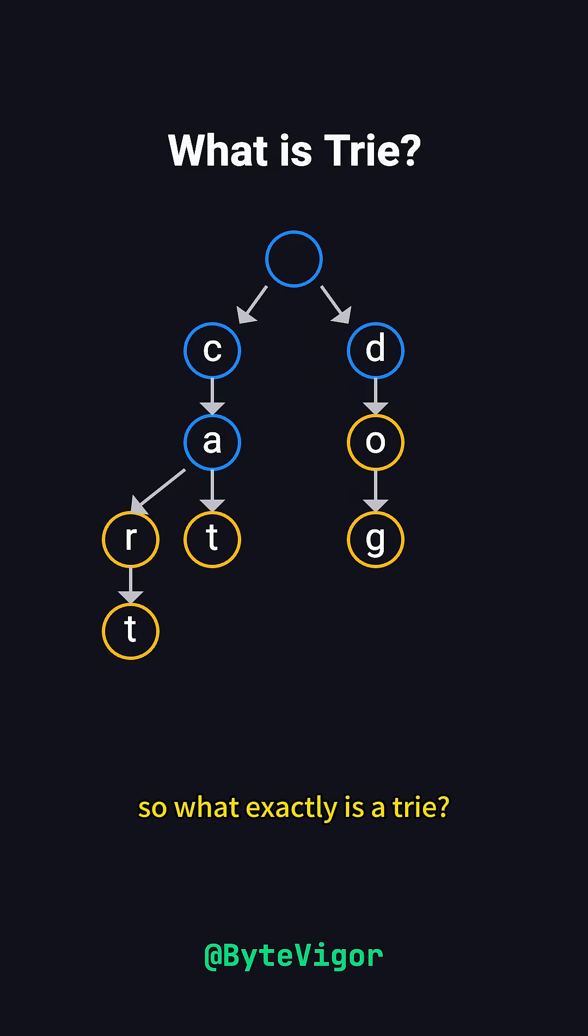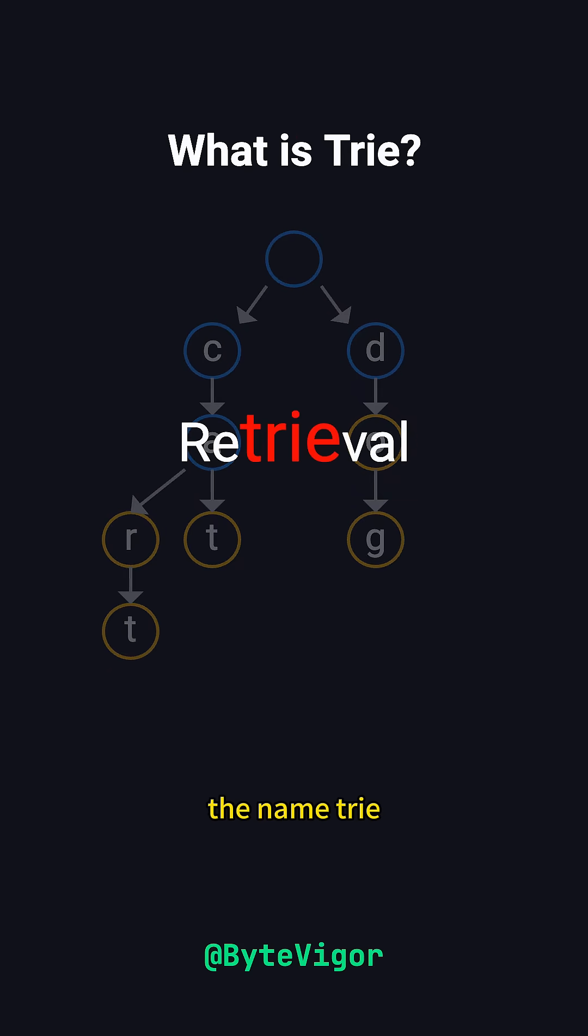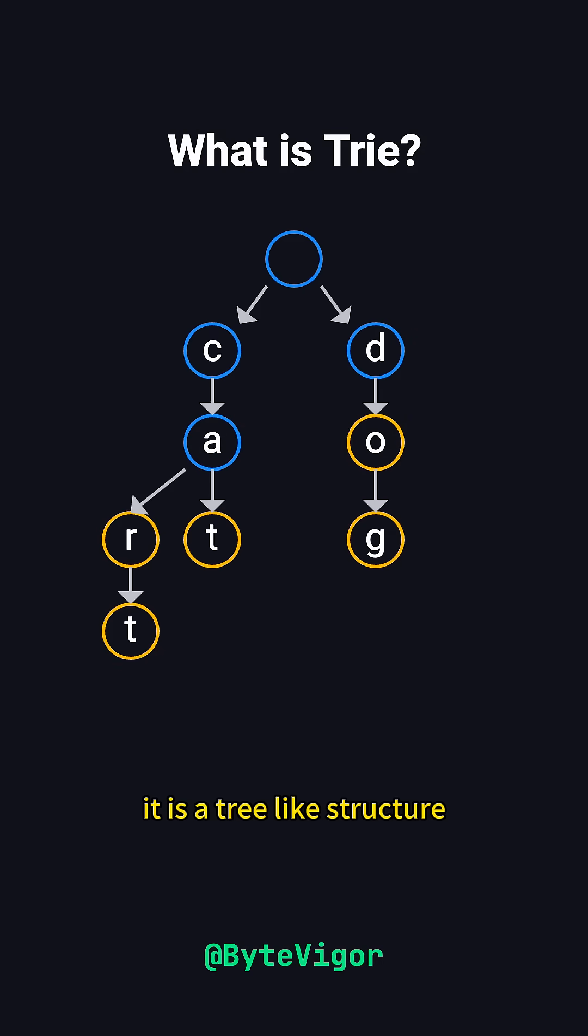So what exactly is a trie? The name trie comes from the middle letters of the word retrieval, which means to fetch. It is a tree-like structure specifically designed to store and manage a large number of words efficiently. In a trie, each node represents a character, and the paths between nodes form words.